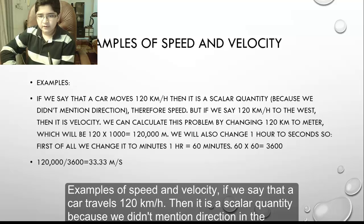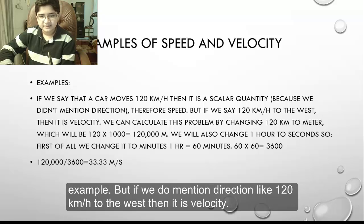Examples of speed and velocity. If we say that a car travels 120 km per hour then it is a scalar quantity because we didn't mention direction in the example. But if we do mention direction like 120 km per hour to the west then it is velocity.